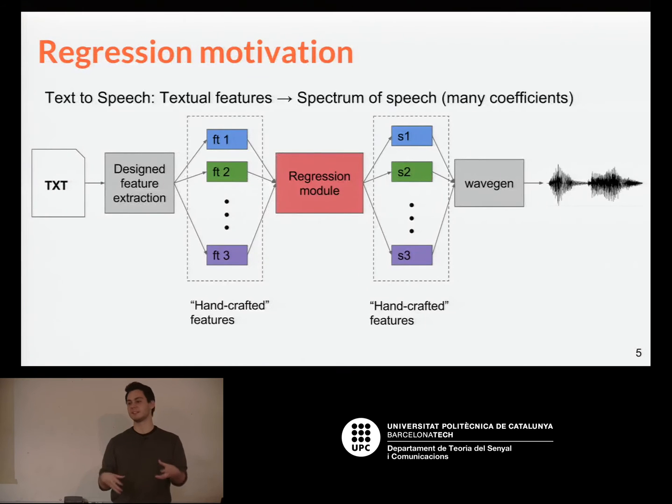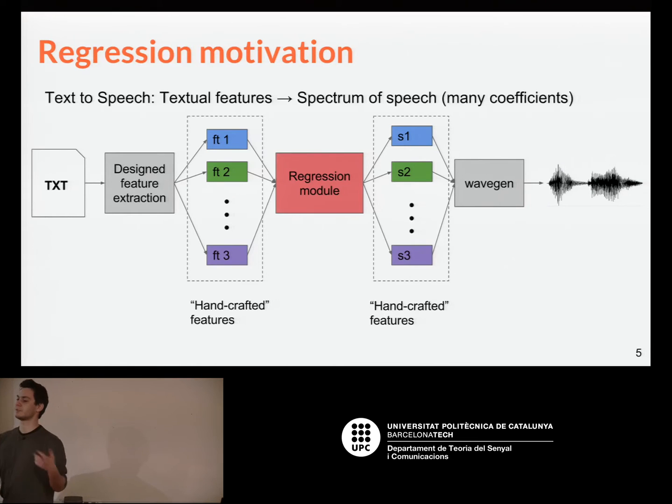And to motivate it for the scope of this course, we have, for instance, as a regression, the text-to-speech task, where we have the input data text. We have some feature extraction, like counting words, transcribing to phonemes from text, etc. And that's mapped through the regression module to continuous variables, for instance, spectrum samples, maybe.